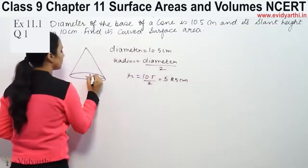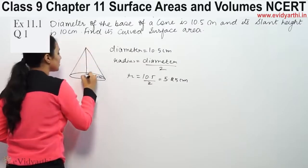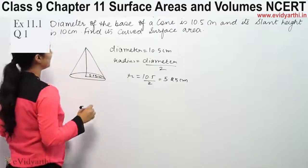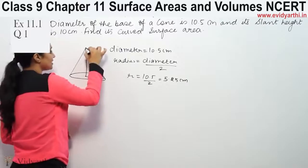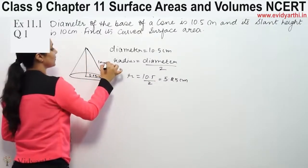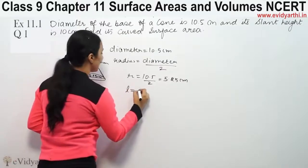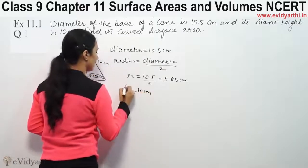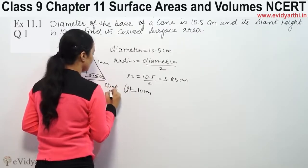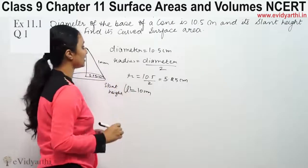The radius value is 5.25 cm. We are also given the slant height. Slant height, denoted by L, is given as 10 cm.